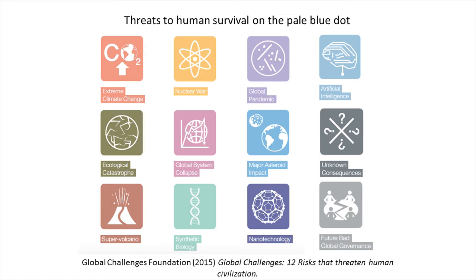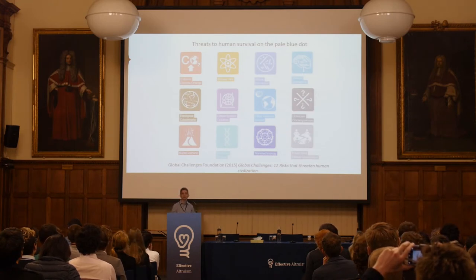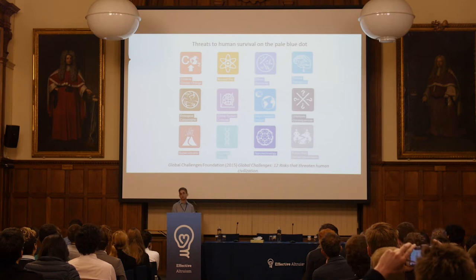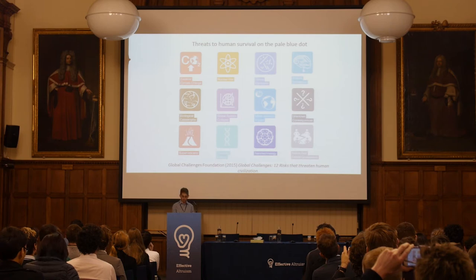We could come up with a list like this, from the Global Challenges Foundation report published in 2015, which has these 12 potential global challenges. Some would be more familiar to you — the asteroid strike, the supervolcanic eruption — some might be less familiar. This is good and we need this kind of work. We need to bring up these scenarios, think about how they might play out, and what work we can do to mitigate or prevent them.